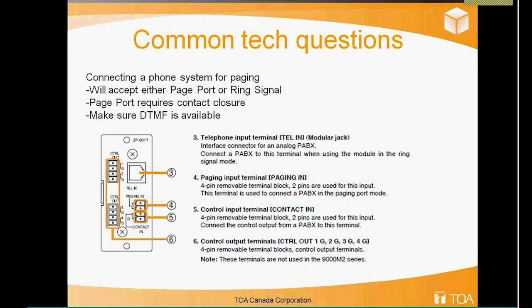Ring signal mode treats the module input as an analog extension. The phone guys give you a dedicated line or phone number as your own extension, which opens as a page when called. In ring signal mode it behaves like a fax machine, ringing about two to two-and-a-half times before picking up. Some people don't like that delay and prefer to go back to page port mode. DTMF is also required for ring signal — without button press tones the ZP module won't know where to route anything.